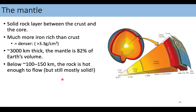The next layer up is the mantle — a solid rock layer between the core and the crust, so it's in the middle. There's a lot more iron in our mantle, which is a very heavy material, than there is in our crust, so the mantle is much more dense than our crust. It's about 3,000 kilometers thick, and the mantle actually makes up about 82 percent of earth's volume — the majority of earth's volume is in the mantle.